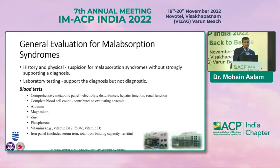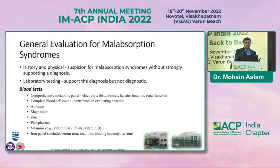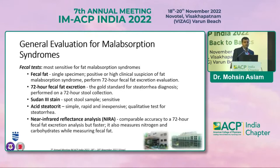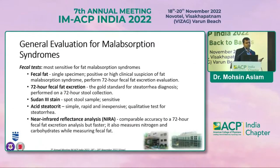For general evaluation of malabsorption syndromes, when history and physical examination raise suspicion, we can perform general tests including metabolic panel such as liver function tests, renal function tests, electrolyte assessment, hemogram for anemia, albumin levels, and micronutrients like zinc, magnesium, and vitamins. Fecal fat testing is more sensitive for fat malabsorption; 72-hour fecal fat is the gold standard though cumbersome. Other tests include Sudan stain, steatocrit, and near-infrared reflectance analysis, which is comparable to 72-hour fecal fat but faster and can also measure nitrogen and carbohydrates.